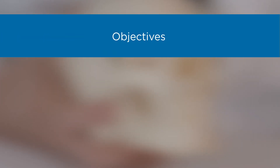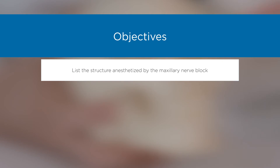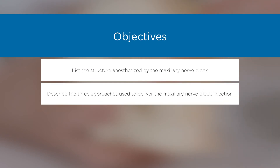Objectives: List the structures anesthetized by the maxillary nerve block. Describe the three approaches used to deliver the maxillary nerve block injection.